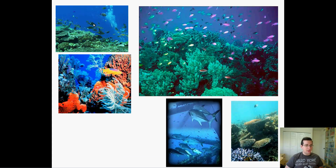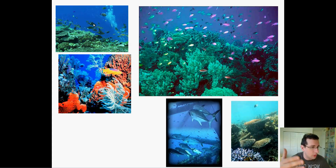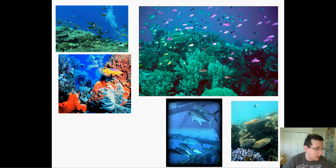Then you have the neritic zone, which includes the sublittoral zone — the benthic zone underneath the continental shelf — and it's going to have a lot of life. Things like coral reefs can be found here if the water is nutrient-poor, as we talked about. The sublittoral zones are full and rich with life, including coral, and a lot of fish living off these organisms as well.